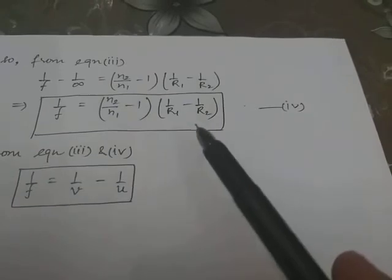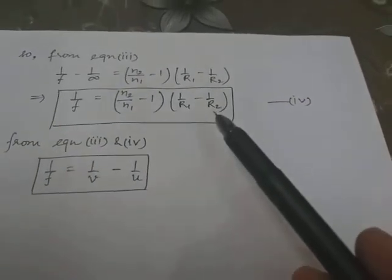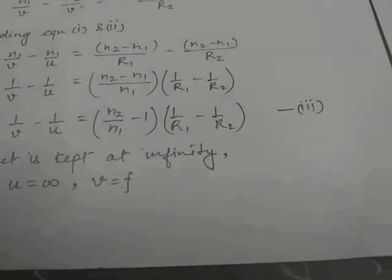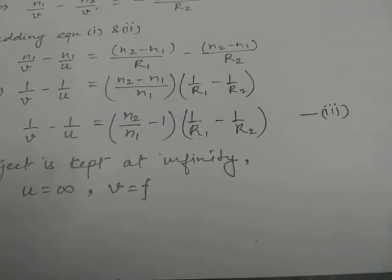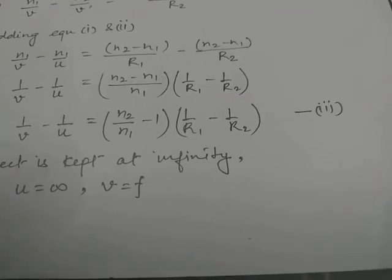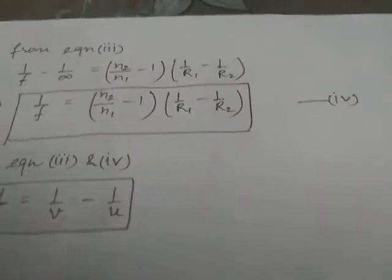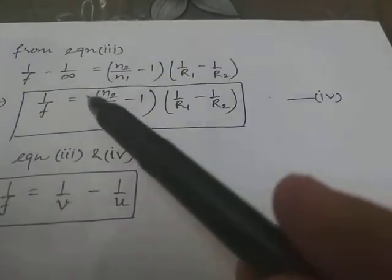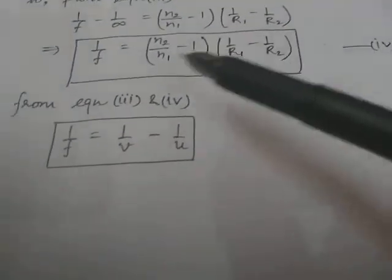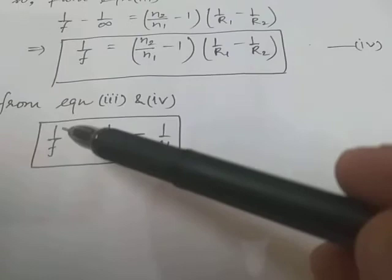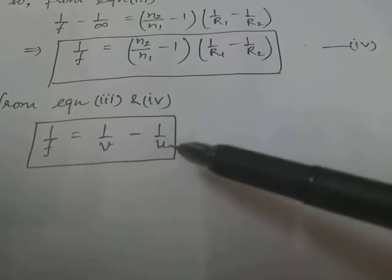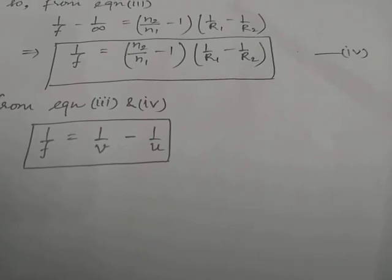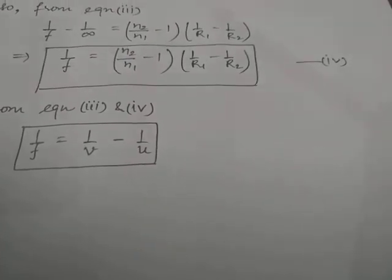From equations three and four, notice that the left-hand side of equation three is 1/V minus 1/U equals something, and the left-hand side of equation four is 1/F with the same right-hand side. Therefore, from equations three and four we can say 1/F equals 1/V minus 1/U. That is the final form of the lens maker's formula. That is all for this derivation, thank you.